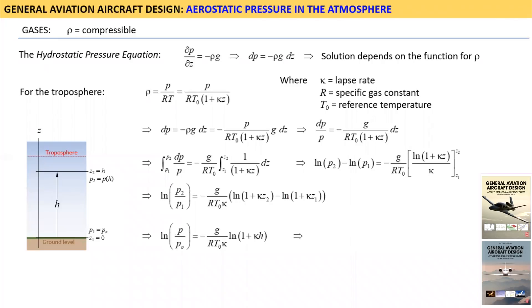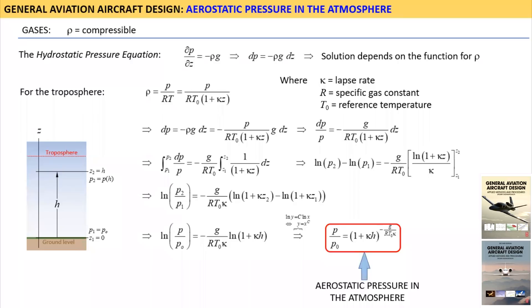Then, using another well-known logarithmic identity, we eliminate the logarithms on both sides and get this form. This form allows us to calculate the aerostatic pressure at any altitude H in the atmosphere, as long as it is inside the troposphere. The relationship for altitudes above the troposphere can also be derived using this method as long as proper altitude-dependent parameters are used.